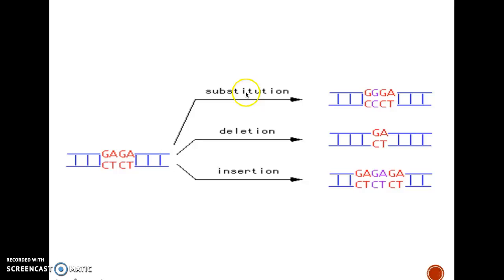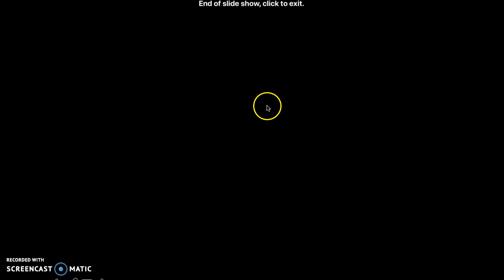Make sure you keep an eye for these three types. Substitution is when you change one base. Deletion is when you get rid of one of the nucleotides — that's going to change everything. And an insertion is when you insert a nucleotide where it doesn't belong. I hope you found the information you need in this video. Please always write a summary about what you've learned. I will see you in the next video.